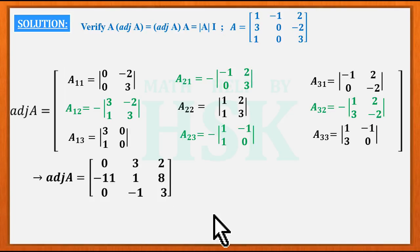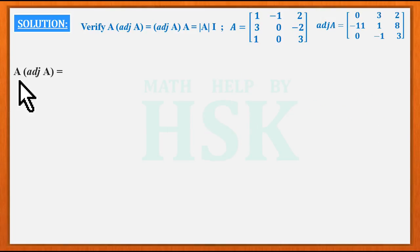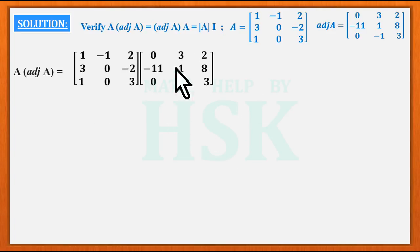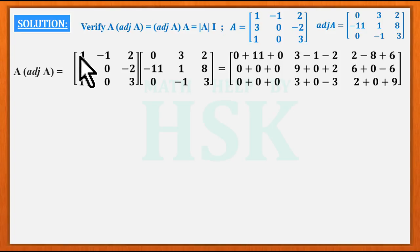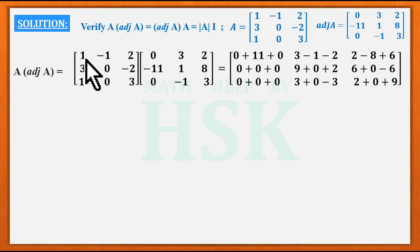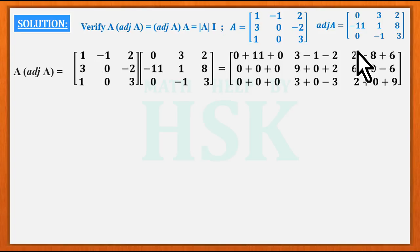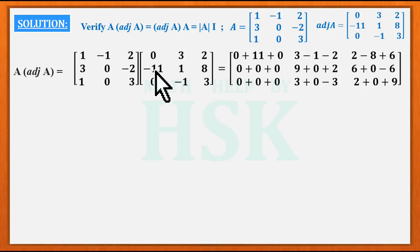Now we have to calculate A into adjoint of A. We take matrix A and adjoint of A and multiply them. On multiplying, the product is obtained as follows: 1×0=0, (-1)×(-11)=11, 2×0=0; 1×3=3, (-1)×1=-1, 2×(-1)=-2; then 1×2=2, (-1)×8=-8, 2×3=6; 3×0=0, 0×(-11)=0; and continuing row by row through the full product.